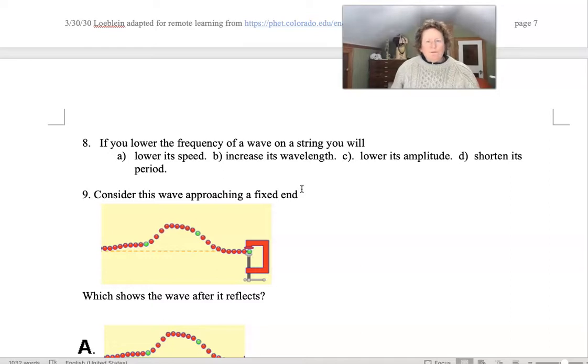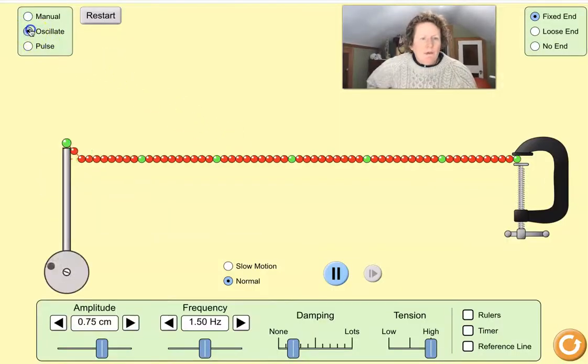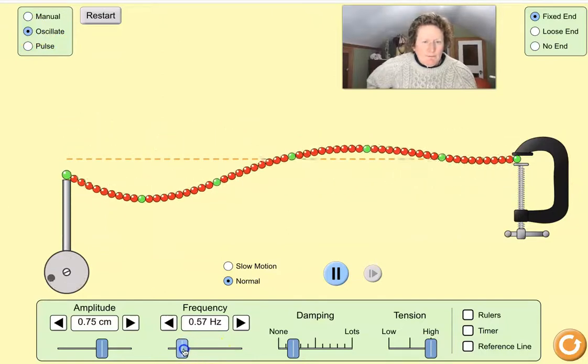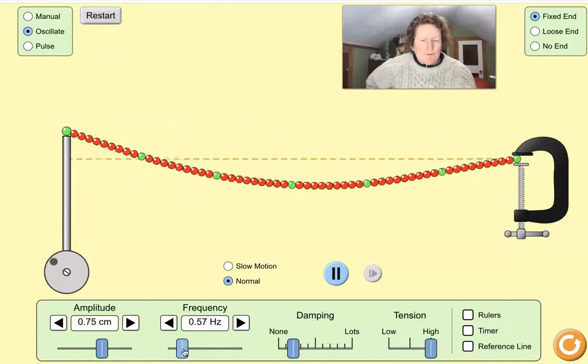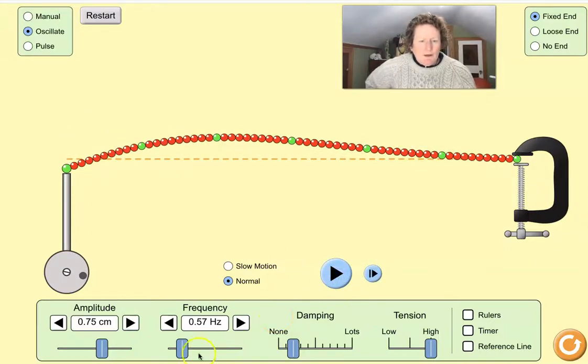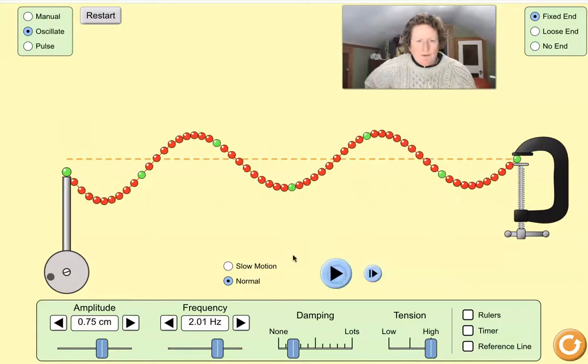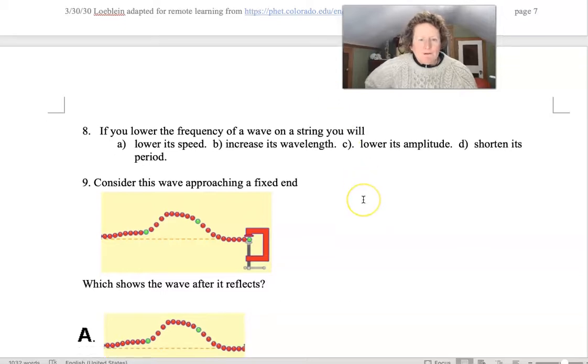If you have a lower frequency of a wave on a string, what will happen? Well, let's go and make a low frequency wave here. Don't change anything else. You can stop it and check it out. You can make the frequency higher and check that out. And stop it and look at it. And make your decision.